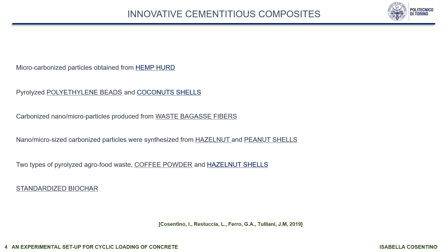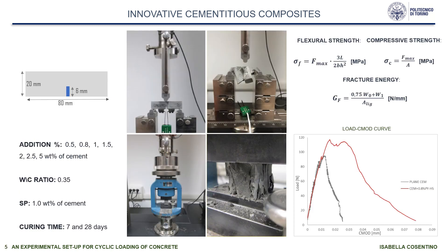So, we investigated pyrolyzed nano-microcarbon particles obtained from AMP-DARP, polyethylene beads and coconut shells, waste bagasse fibers, hazelnut and peanut shells, coffee powder, and a standardized biochar, in different percentages of addition according to the cement weight. Compression and flexural tests were carried out. Flexural compressive strength and fracture energy increased in specimens with the addition of small quantities of pyrolyzed carbon nanoparticles. This slide shows the load–crack-mouth opening displacement curve, reflecting how the load increases and how the area under the curve increased, generating greater fracture energy in biochar-based composites.